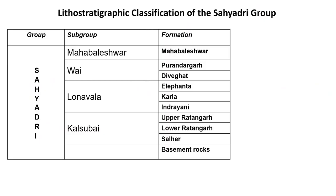The Sahyadri group is further divided into four sub-groups: Kalsubhai, Lunavada, Vai, and Mahabaleshwar. The Kalsubhai sub-group is divided into the Salher formation and the Ratangad formation, with the latter divided into lower and upper Ratangad. Lunavada is divided into Indrayani, Karla, and Elephanta; Vai into Deveghat and Purandhargad; and Mahabaleshwar into the Mahabaleshwar formation.